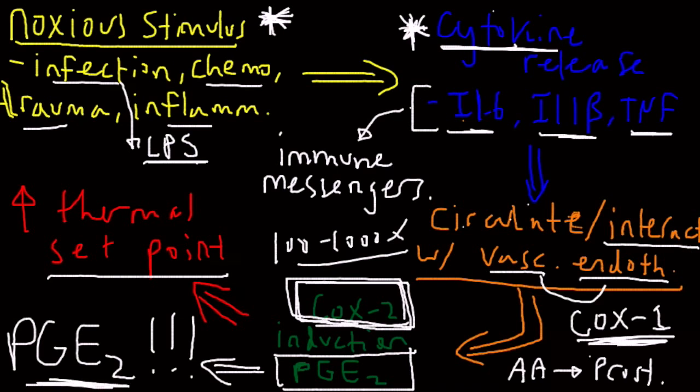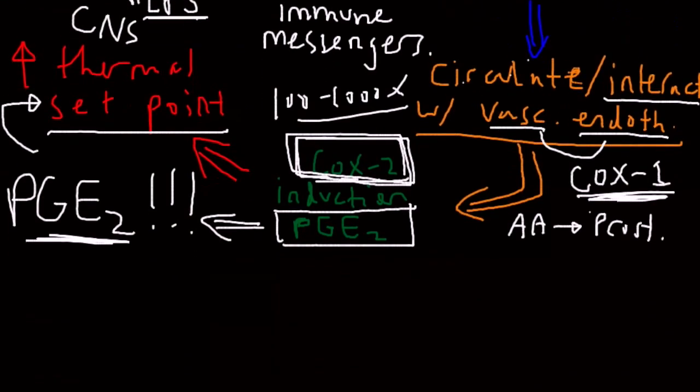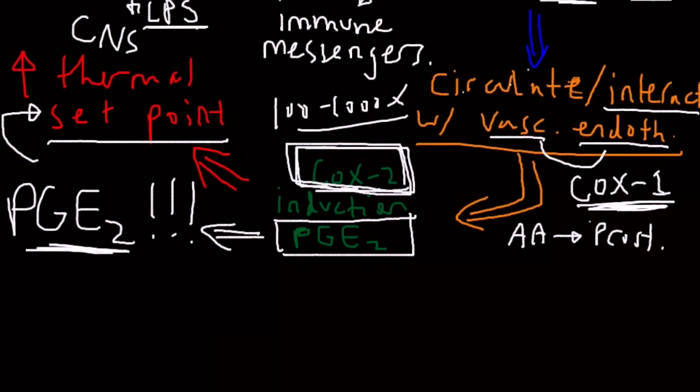When prostaglandin E2 is produced in the central nervous system—for those of you who are a little bit more neurologically inclined, that's at the site of the hypothalamus—this is the thermostat of the body, the hypothalamus.